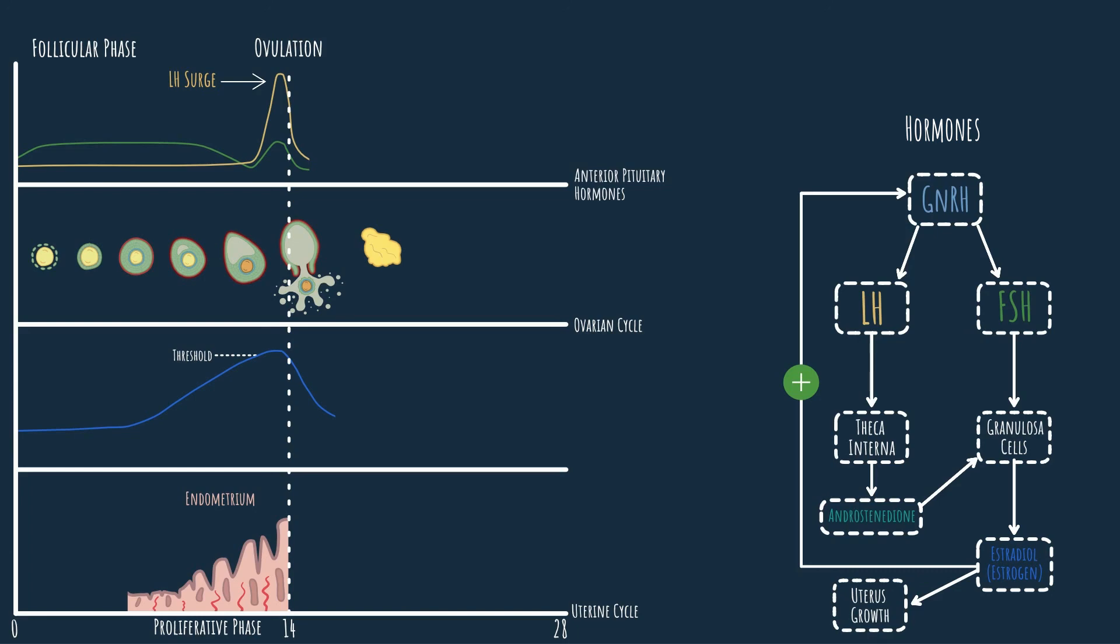So now at the end of the follicular phase, we have an ovulated oocyte and a corpus luteum. In the next video, we're going to continue and see the second half of the menstrual cycle.